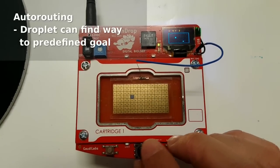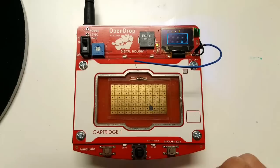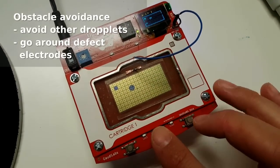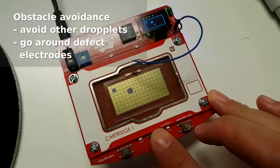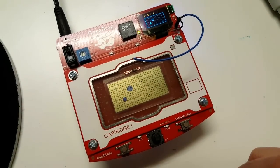Also implemented is an auto-routing. I set the goal, press the button, and the droplet will go to the position. The auto-routing will also avoid other droplets or could even avoid defective electrodes, as you can see here.